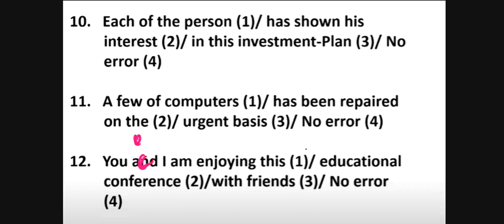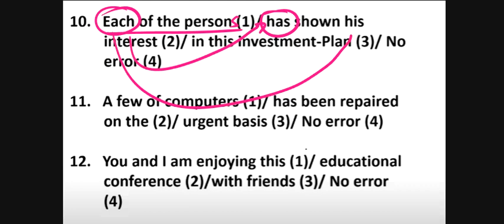Here we will write 'you and I,' then I will be covered. So here we will write 'each of the persons' - persons will be singular, so the singular verb 'has' will come, and the possessive pronoun will be singular.